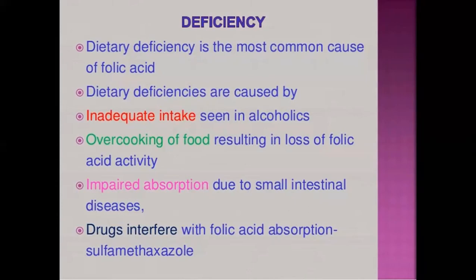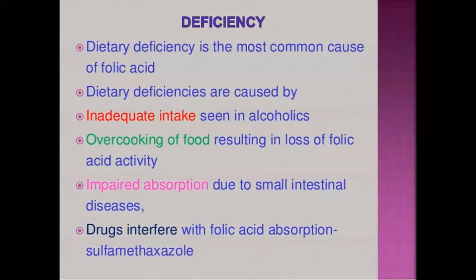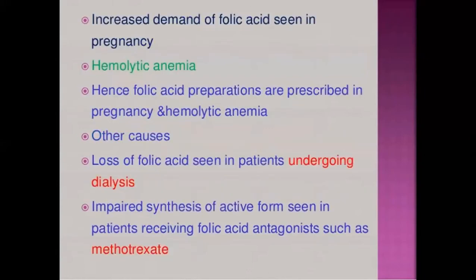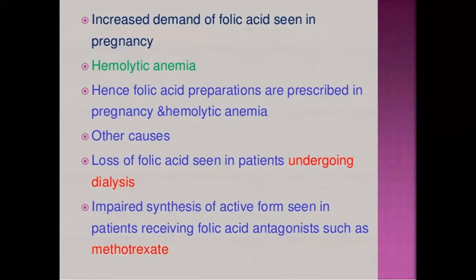Overcooking of food results in loss of folic acid activity in the human body. Impaired absorption due to small intestine disease and drugs that interfere with folic acid absorption — such as sulfa drugs — are additional causes. Increased demand also leads to folic acid deficiency, as seen in pregnancy and hemolytic anemia. Therefore, folic acid preparations are prescribed in both pregnancy and hemolytic anemia.